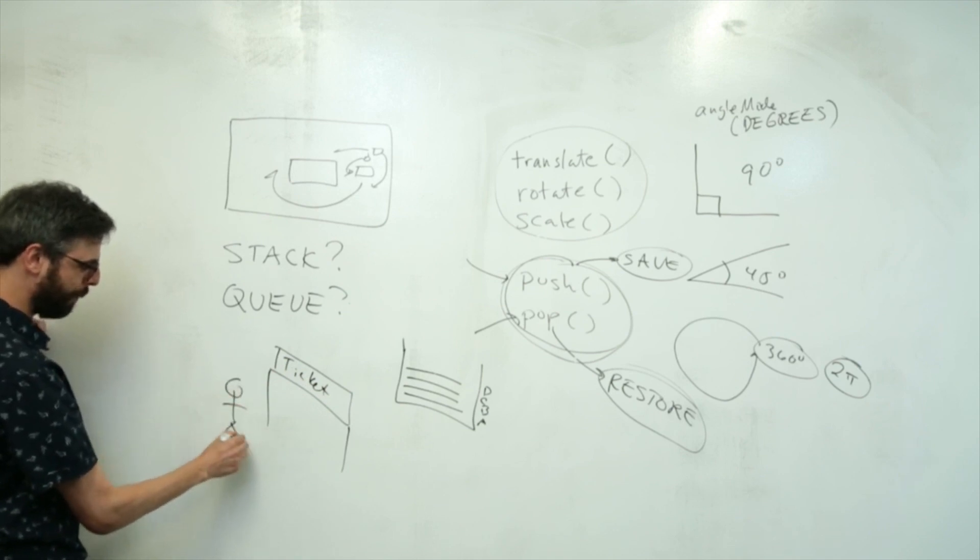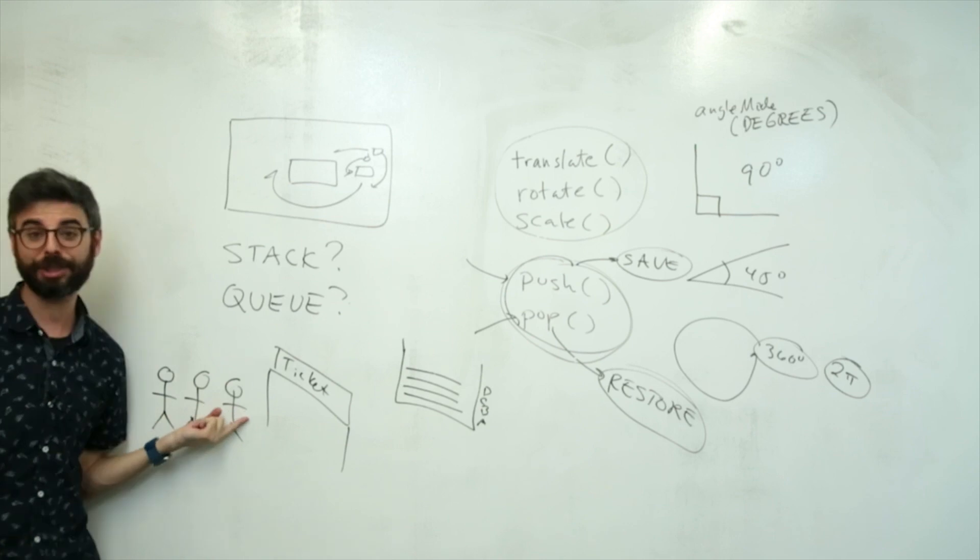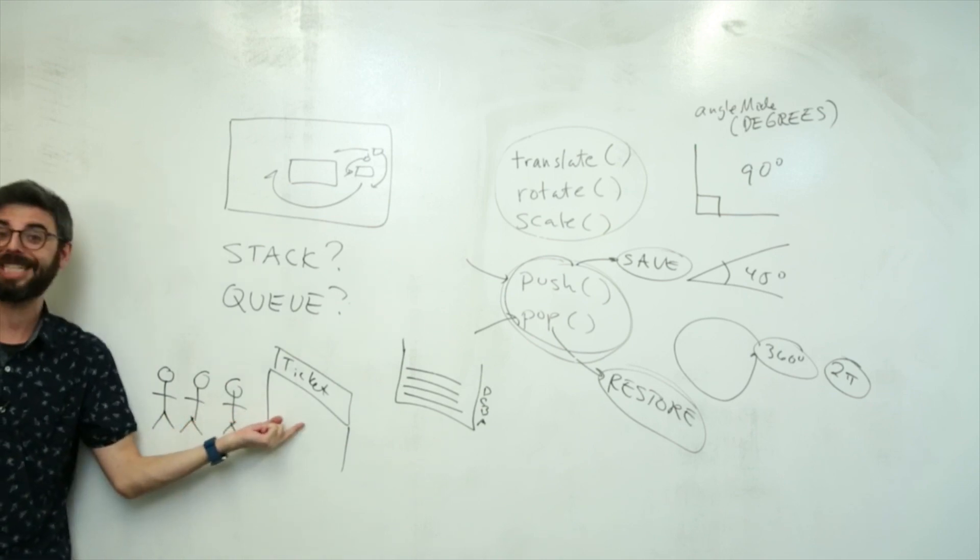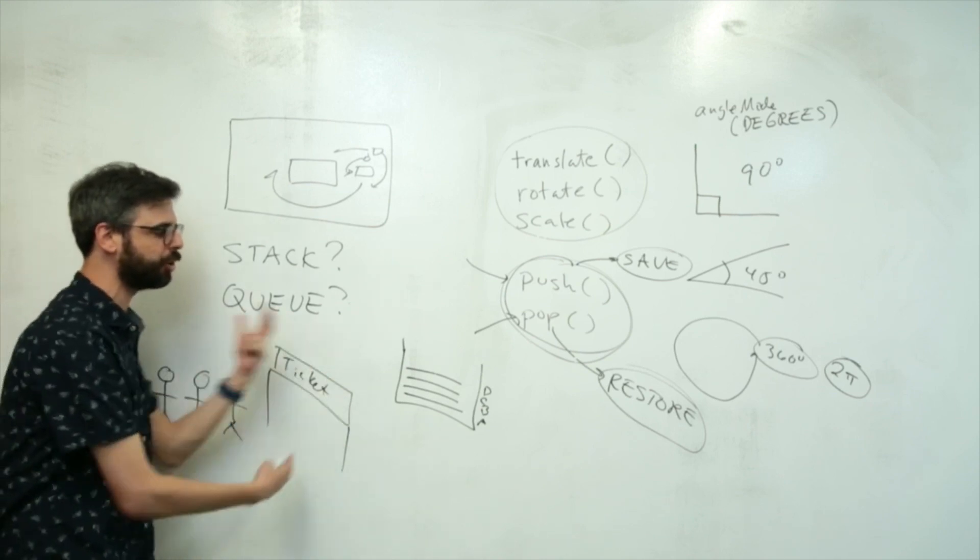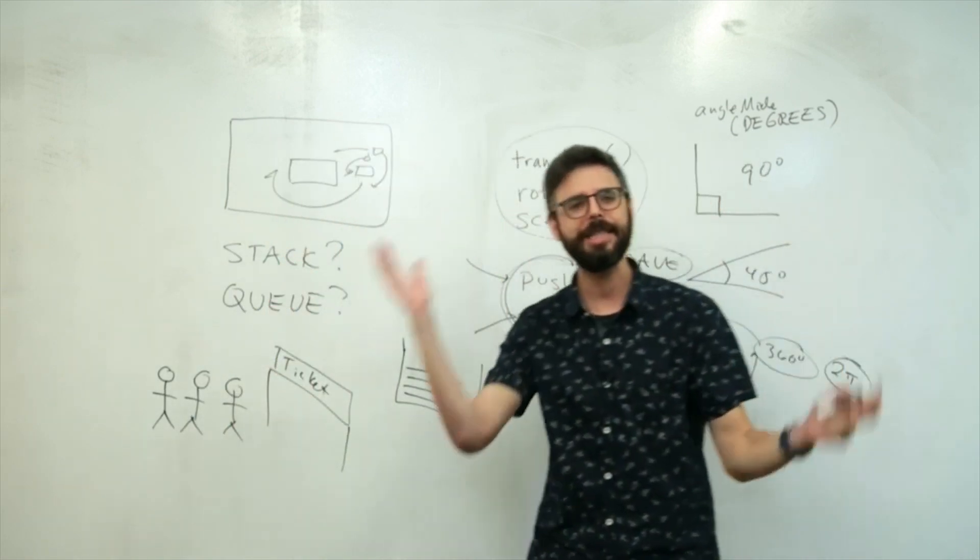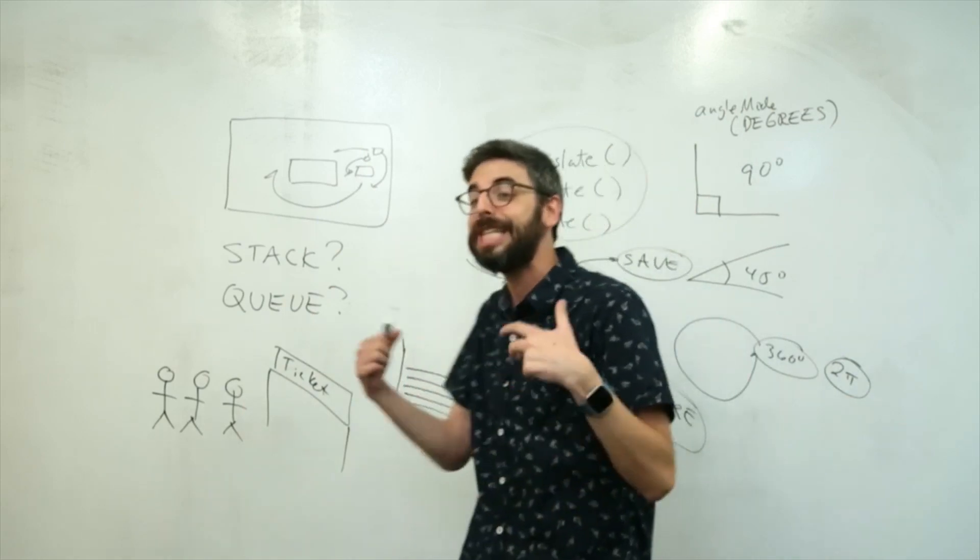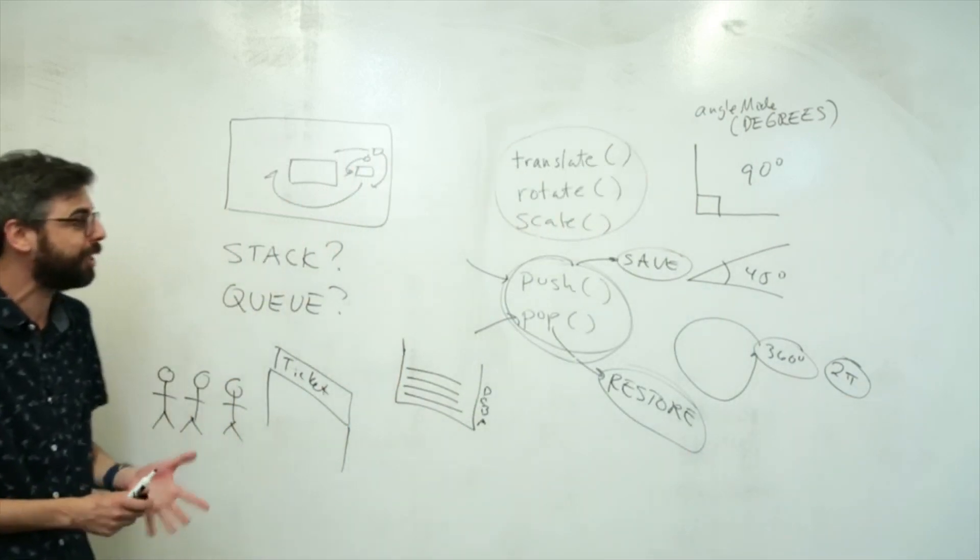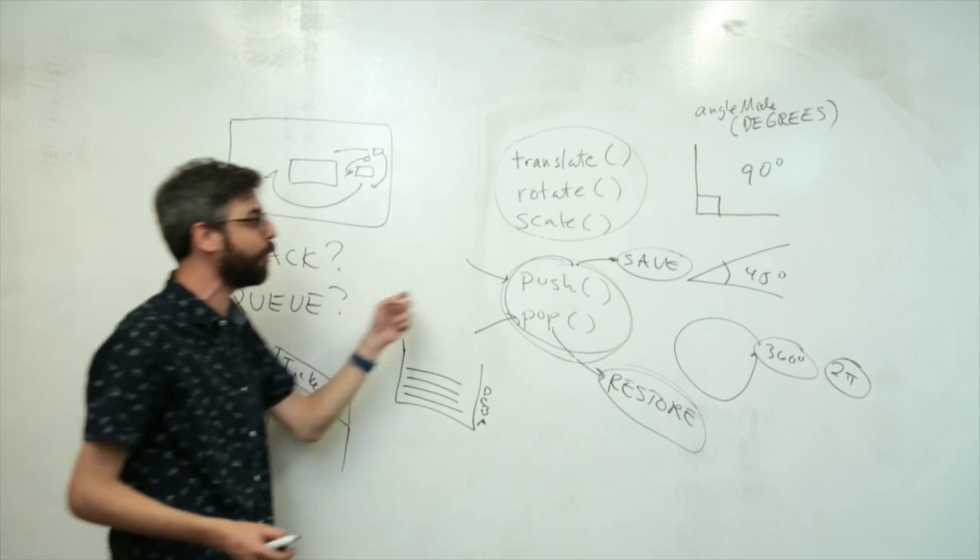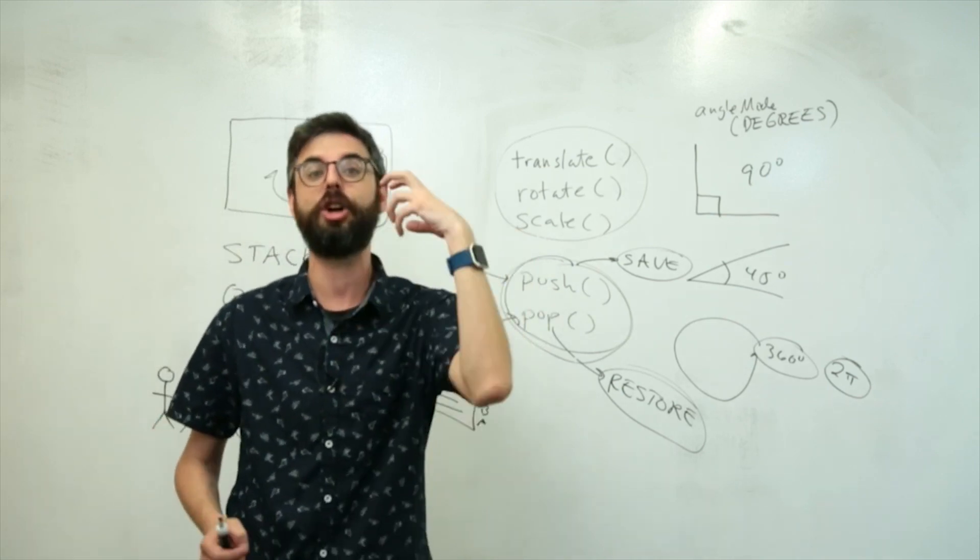This is different than a queue, which you could think of like some kind of ticket window, right, where people line up in a queue. The first person in line for the queue is the first person to get a ticket. So these are data structures that are common to a lot of programs and a lot of scenarios that if you watch all of my videos, might come up in lots of other places. You don't really need to worry about this too much in the case of transformations.